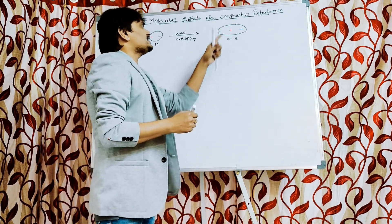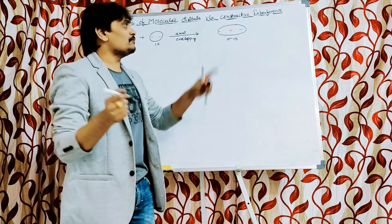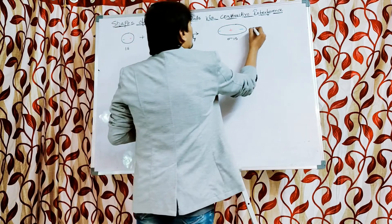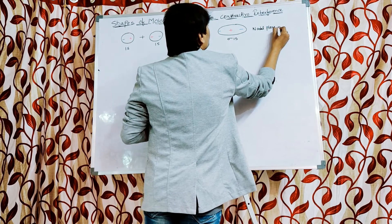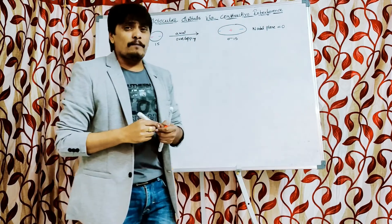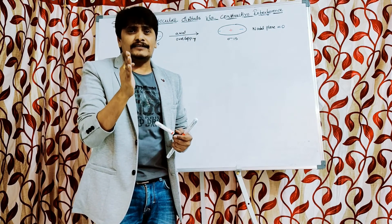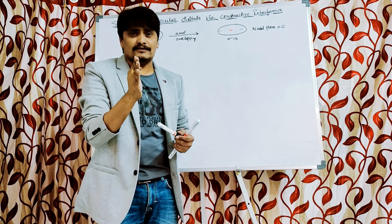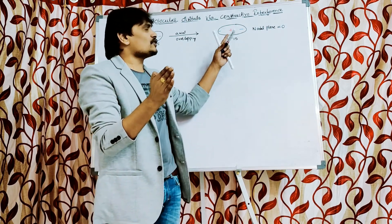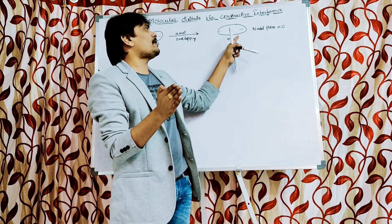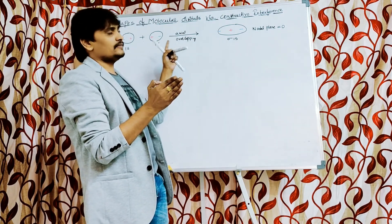The resulting sigma 1s molecular orbital is ellipsoid or oval in shape, similar to an S orbital which is spherical. Because of this, the number of nodal planes is 0. A nodal plane is the plane in which the electron density is zero. Since the S orbital has zero nodal planes, and this molecular orbital resembles an S orbital, the sigma 1s molecular orbital formed by combination of two 1s atomic orbitals also has zero nodal planes.